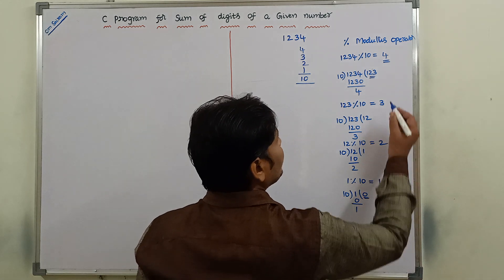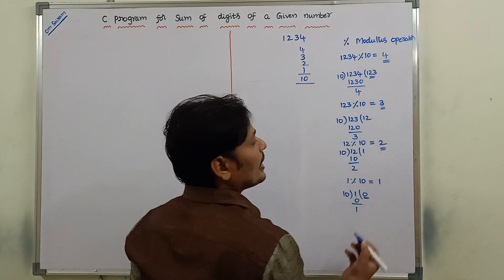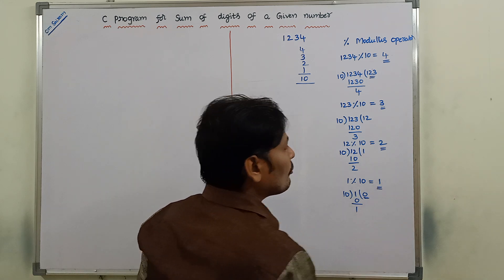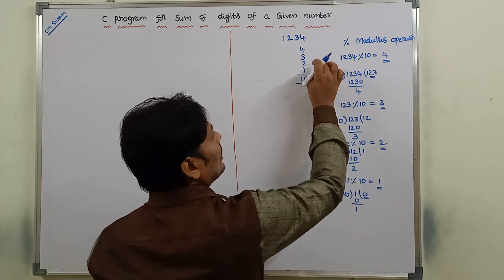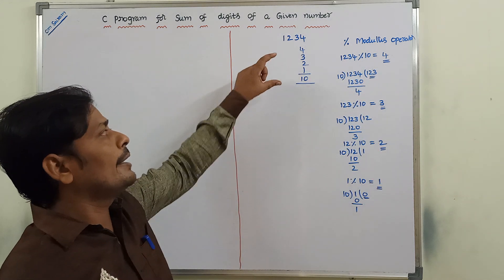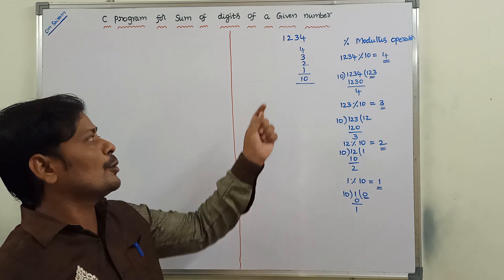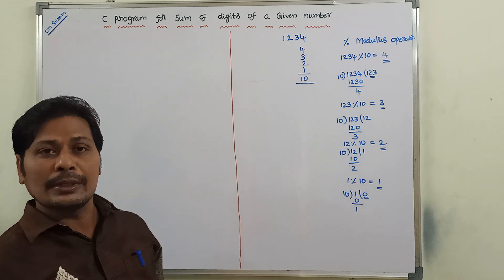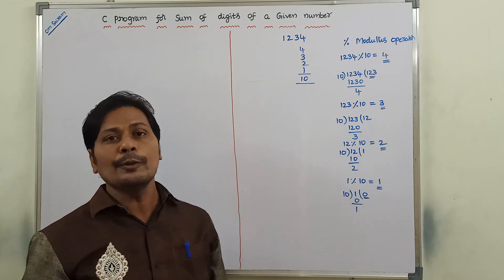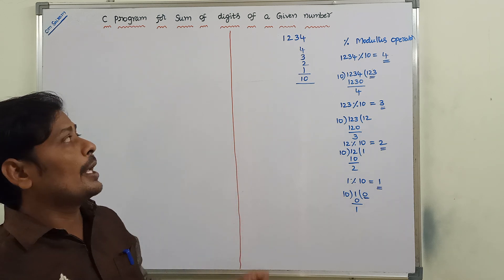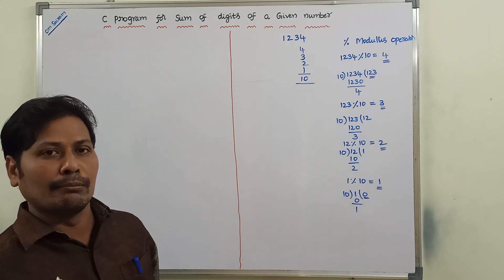Then, what are the individual digits we are getting? First we are getting 4, next 3, next 2, next 1. Once we are getting the individual digits, we have to find out the sum of those individual digits. We are getting the value 10. This is the simple logic we have to use to find out the sum of individual digits of a given number.